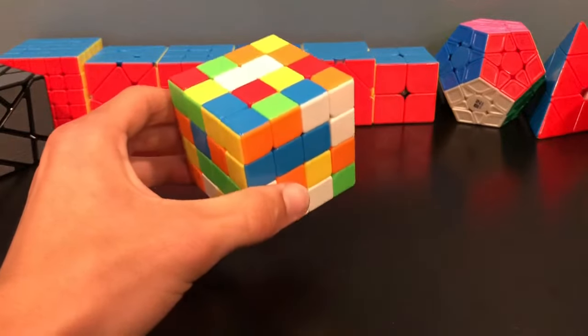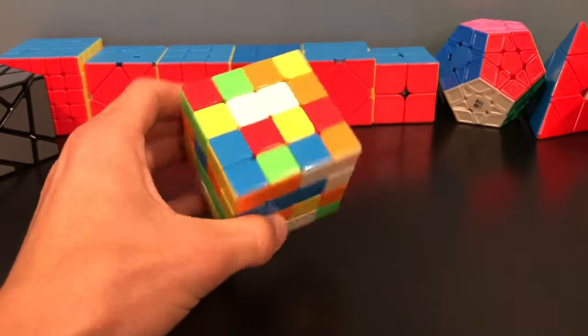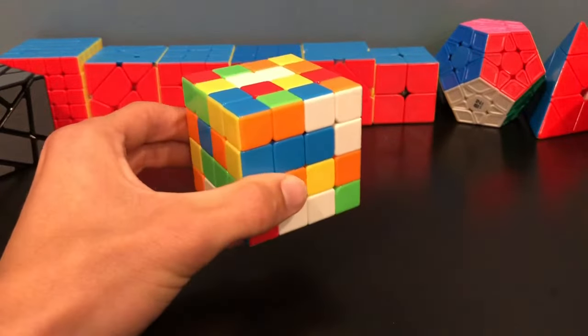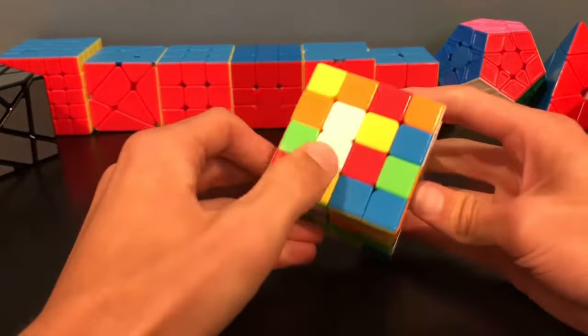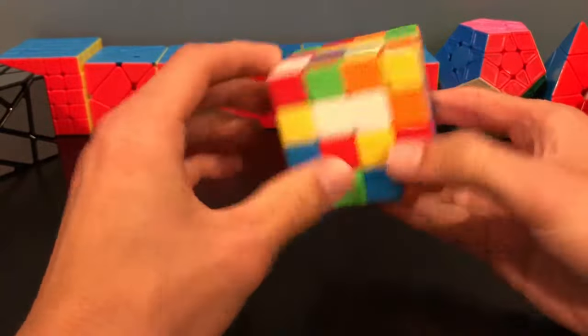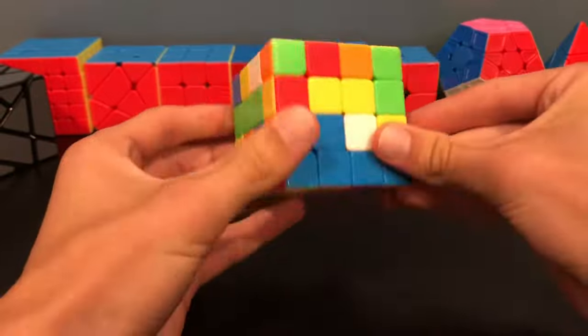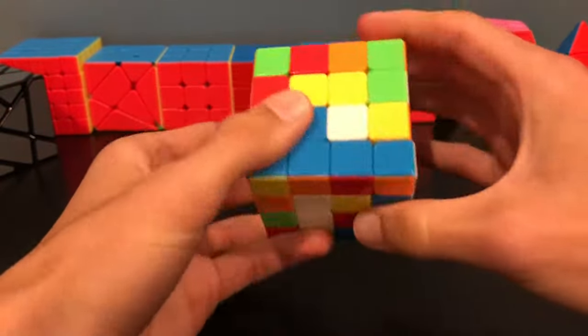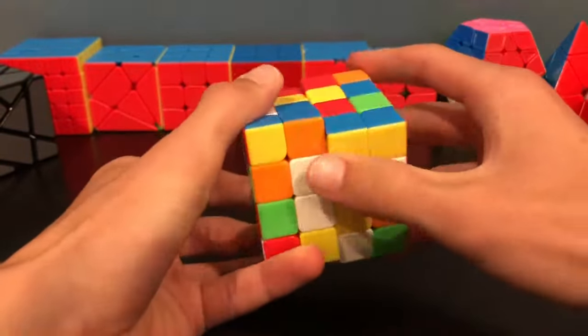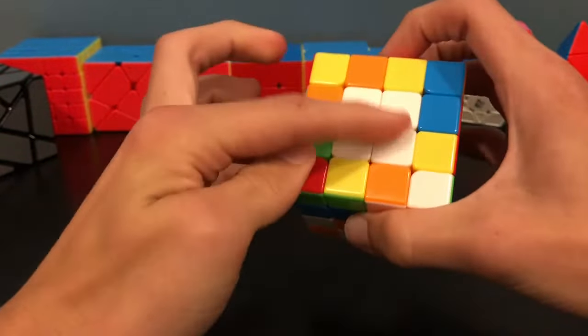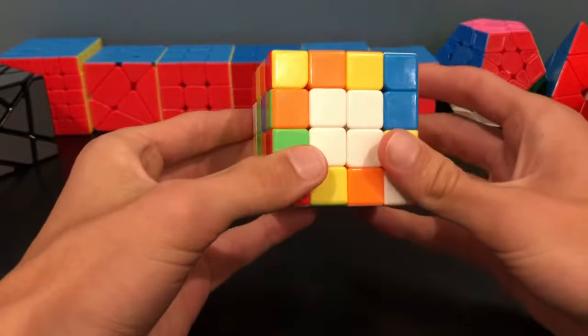The first step of the reduction method is to get one center. I'm going to start with white, so I'd suggest you start with white as well so that you can follow along. There's going to be four white pieces around the cube that you're going to have to put on the same face. This part doesn't really have any algorithms. I like to put two together and two together and then I can just put all four together. That step is really simple.